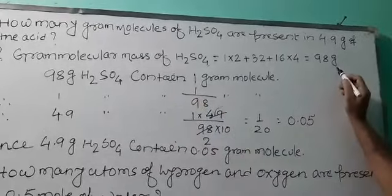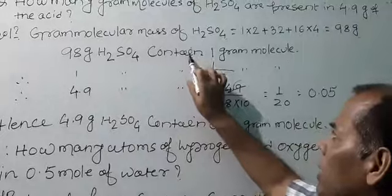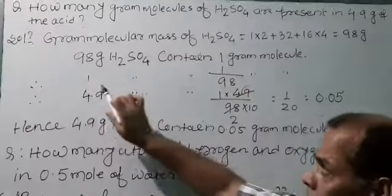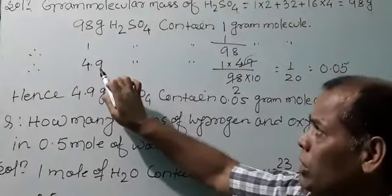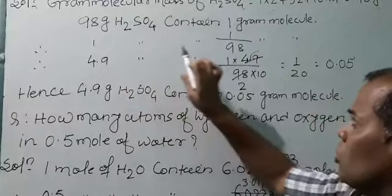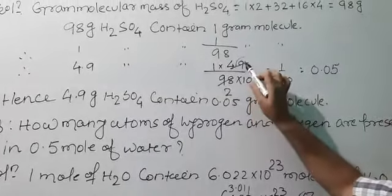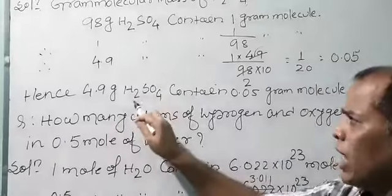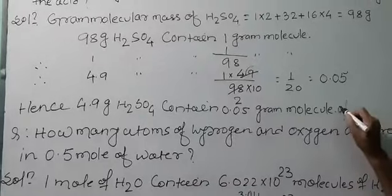Since it is a gram molecular mass, the unit is gram. So gram molecular mass of H₂SO₄ is equal to 98 grams. Now, 98 grams of H₂SO₄ contain 1 gram molecule. Therefore, 4.9 grams of H₂SO₄ contain 1 × 4.9 ÷ 98. Removing the decimal, place 10 in the denominator, then 49 over 98 equals 1 by 20, which is equal to 0.05. Hence, 4.9 grams of H₂SO₄ contain 0.05 gram molecules.